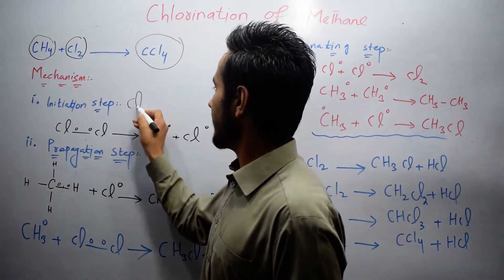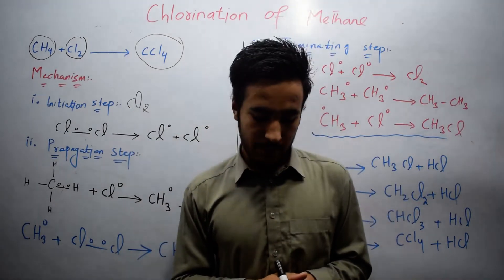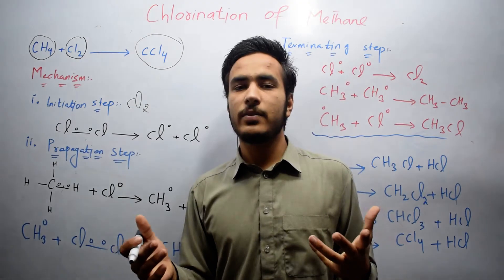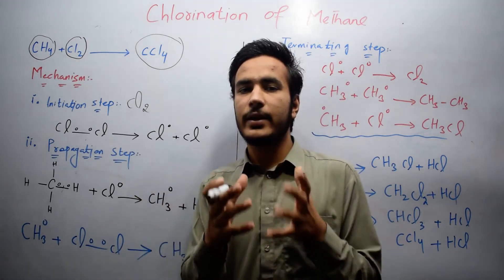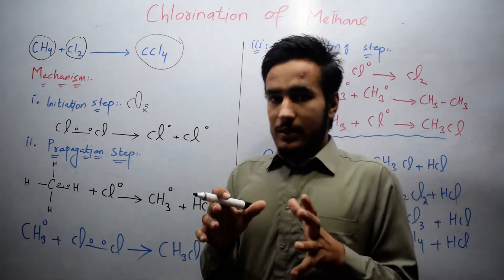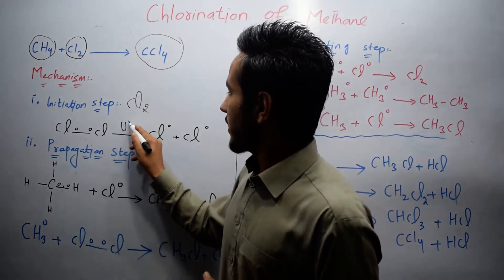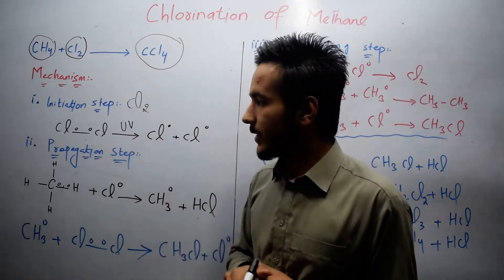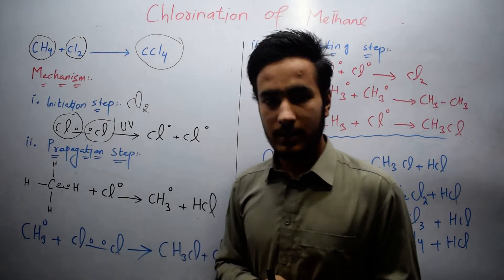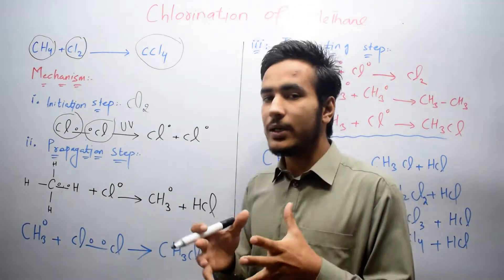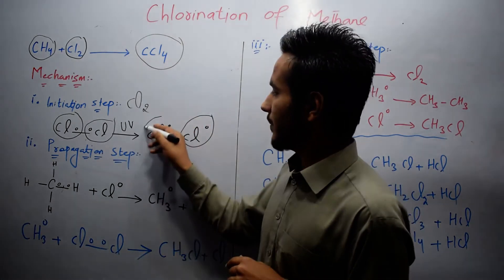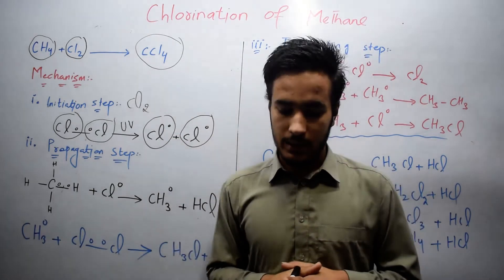In the chlorine molecule, homolytic cleavage takes place. Homolytic cleavage means that both bonded atoms get the same number of electrons — each gets its bonded electron. Under ultraviolet radiation, when we apply UV radiation, homolytic cleavage takes place and each chlorine atom gets its electron. In this way we get two chlorine radicals.